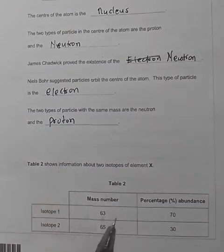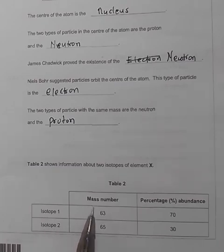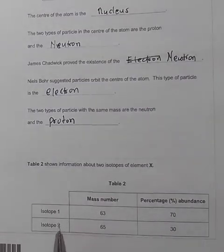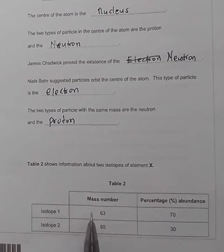Table 2. Table 2 shows information about the isotopes of element X. This is table 2. Then we have isotope 1 and isotope 2. You have their mass numbers and we have the percentage in abundance. The mass number of isotope 1, and from our definition, we know isotopes are of the same element. So we have the mass number, which is 63 and 65. The percentage in abundance is 70% for isotope 1 and 30% for isotope number 2.